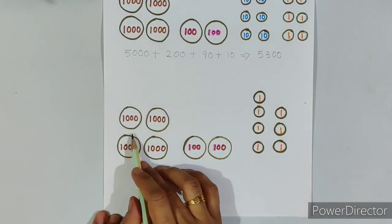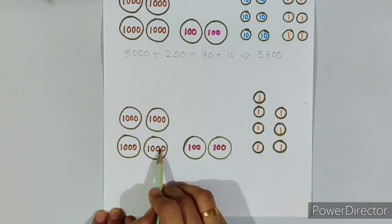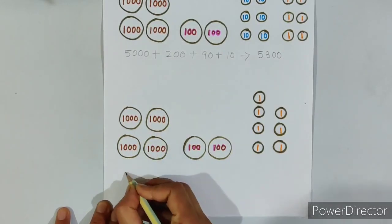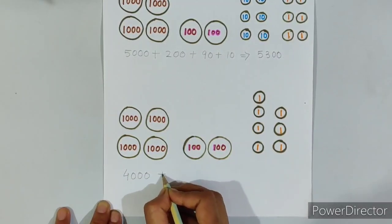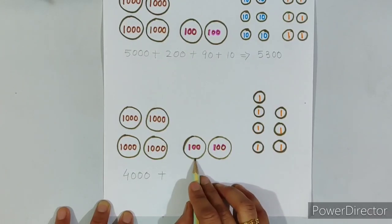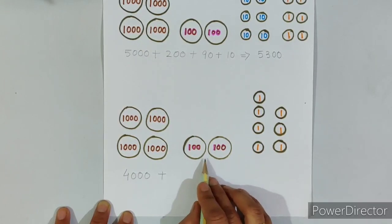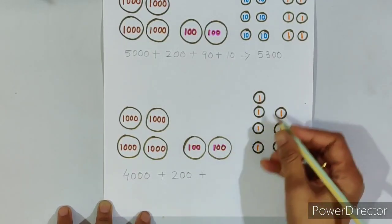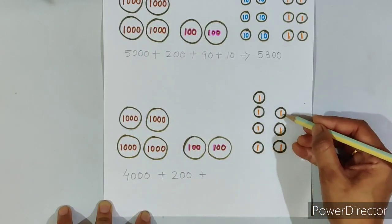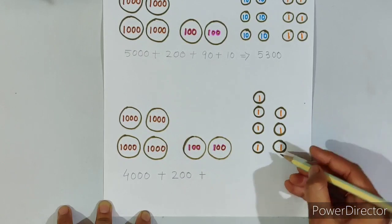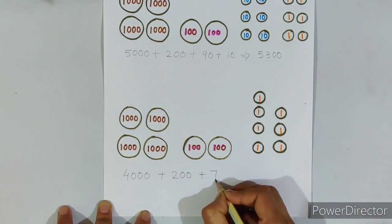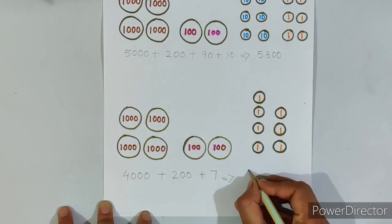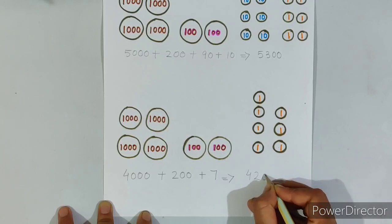Now we will add all the final values together and the answer will be 5,300. Now in the next sum, here we have 4 circles of number 1,000, so the total value of these 4 circles is 4,000. And here we have 7 circles of number 1, so the total value is 7. Now we will add all the final values together and the answer will be 4,207.